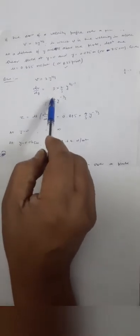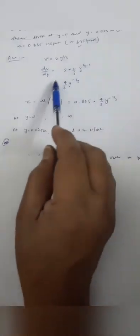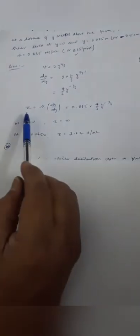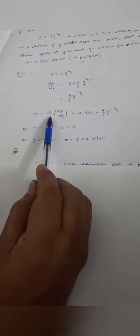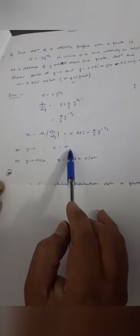Differentiating, velocity gradient du/dy = 2 × (2/3) × y^(2/3 - 1) = (4/3) × y^(-1/3). Shear stress tau = mu × du/dy = 0.835 × (4/3) × y^(-1/3). At y = 0, the shear stress is theoretically infinite. At y = 0.075 m, we substitute y = 0.075 to obtain the corresponding shear stress value in Ns/m².